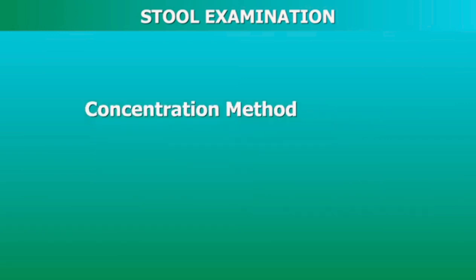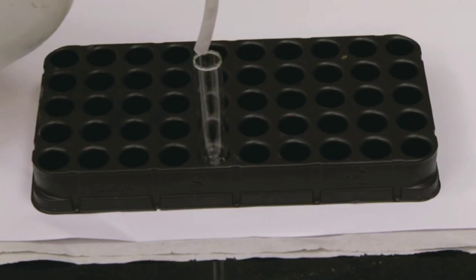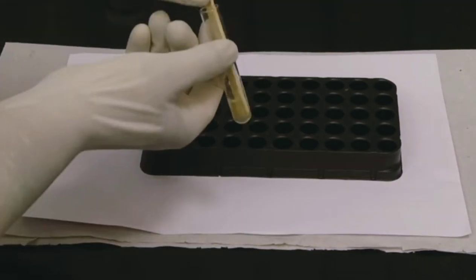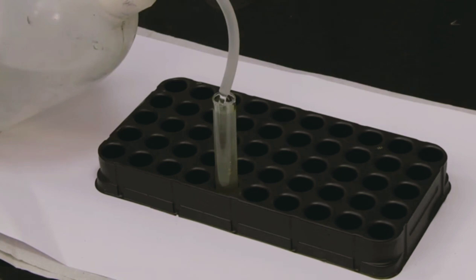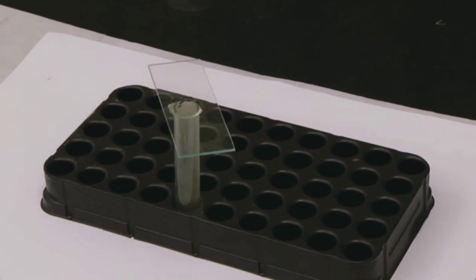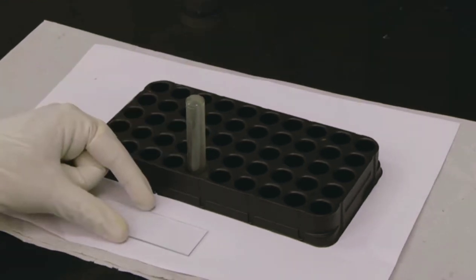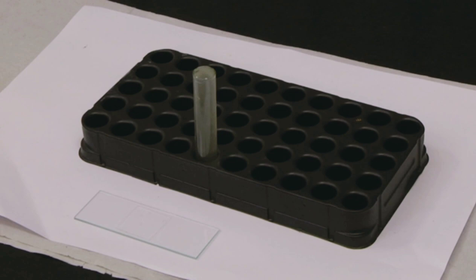Concentration method: If the number of parasites in the stool specimen is low, examination of a direct wet mount may not reveal them and hence the stool should be concentrated. Fill a test tube half with saturated saline. Add a small amount of stool and emulsify well with an applicator stick. Fill the tube to the brim with saturated saline. Cover with a glass slide touching the surface of the mixture. Leave undisturbed for 15 minutes. Remove the slide without spillage, place on a flat surface, and cover the smeared area with a cover slip, taking care to avoid air bubbles. Examine under the microscope.